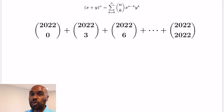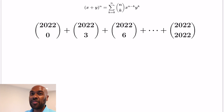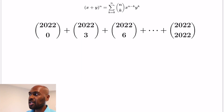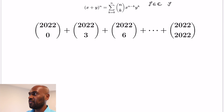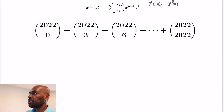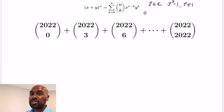Now let's see some cool applications. First we're going to look at summing every third binomial coefficient and finding a closed form expression for this. We're going to start with a complex number zeta whose cube is 1, but choose it to not be 1 itself.